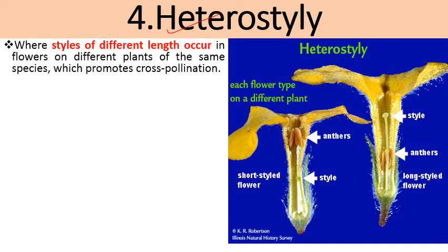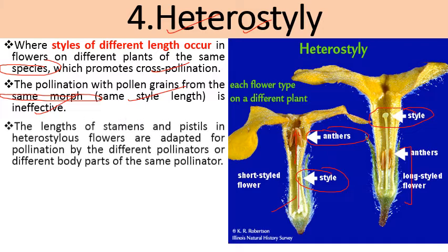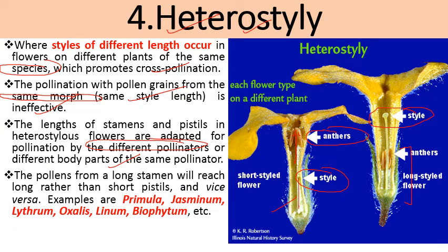The next adaptation is heterostyly. 'Hetero' means different, 'styly' means style — here the height or length of the style differs, where styles of different lengths occur in flowers on different plants of the same species, promoting cross pollination. The pollination with pollen grains from the same morph — same style length — is ineffective. The length of stamens and pistil in heterostylous flowers is adapted for pollination by different pollinators or different body parts of the same pollinator. Examples include Primula, Jasminum, Lathyrum, Oxalis, Linum, and Biophytum.